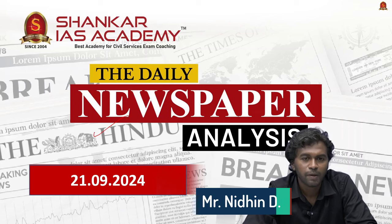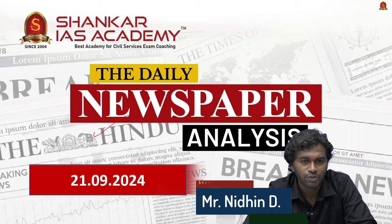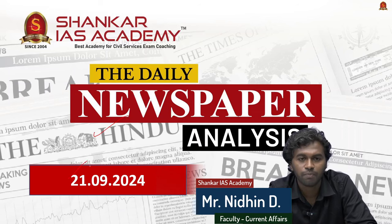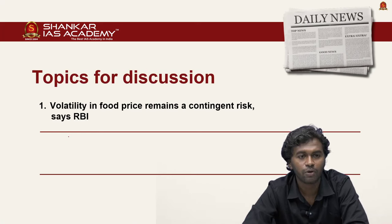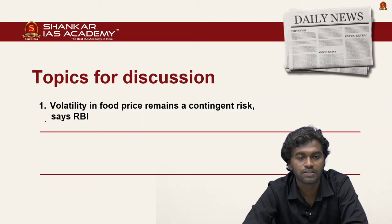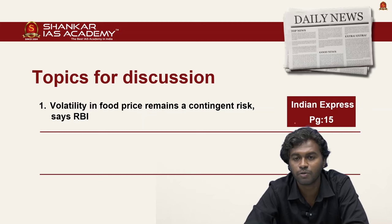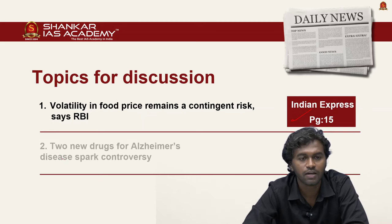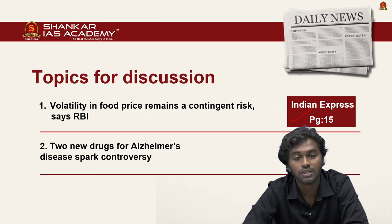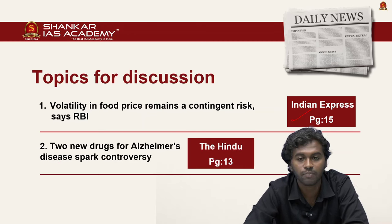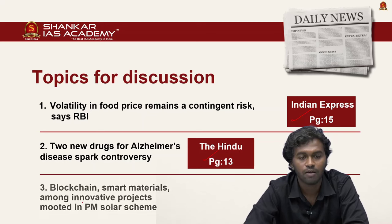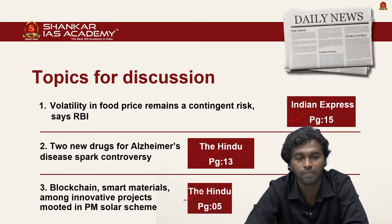Hello everyone, welcome to the daily newspaper analysis brought by Shangaraya's Academy. Today, 21st September, displayed here are the articles we are going to discuss. The first article: 'Volatility in Food Price Reminds a Contingent Risk, Says RBI' from Indian Express. The second: 'Two New Drugs for Alzheimer's Disease Park Controversy' from The Hindu. The third: 'Blockchain, Smart Materials Among Innovative Projects Rooted in PM Solar Scheme' from The Hindu.